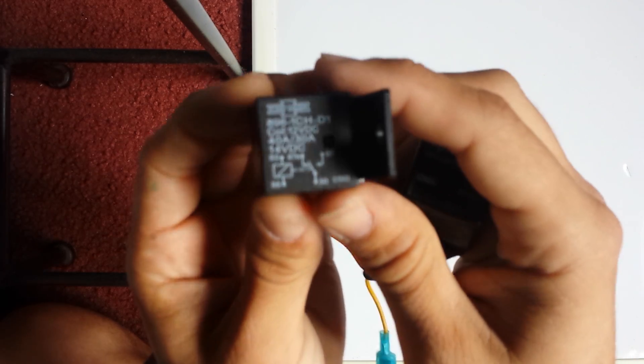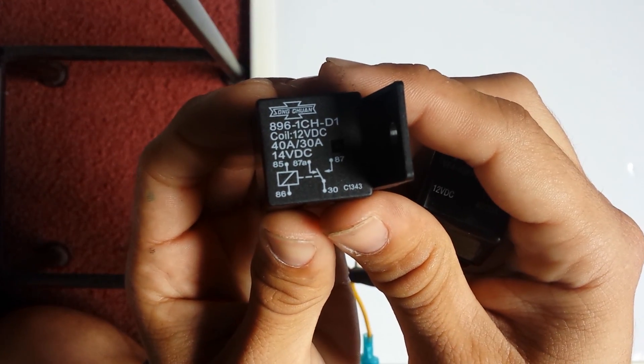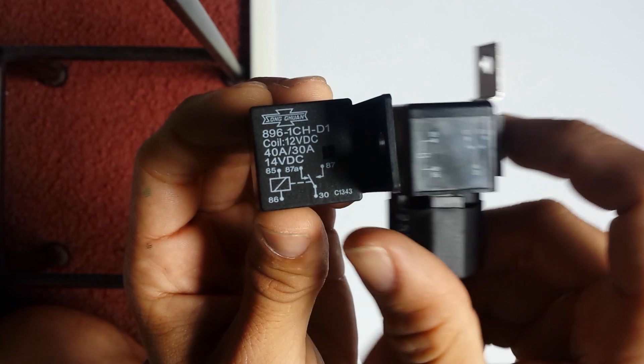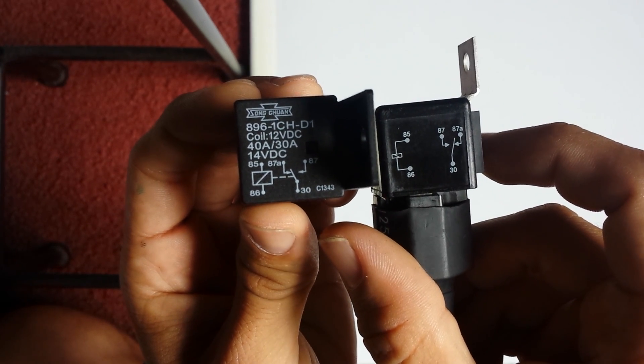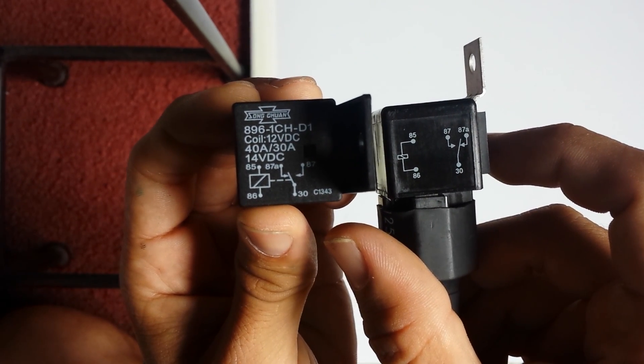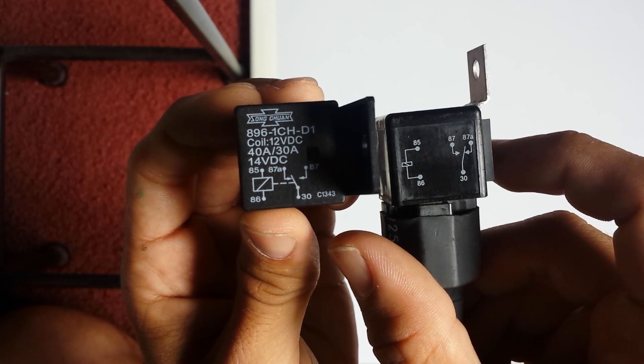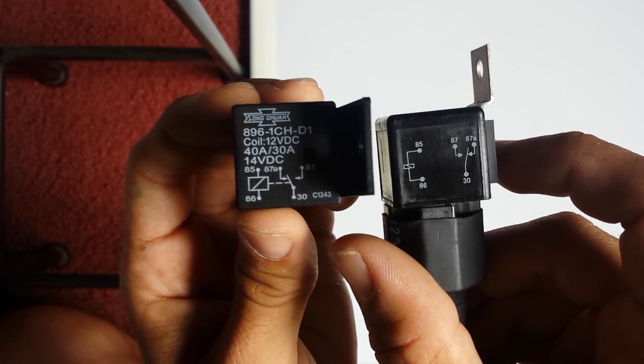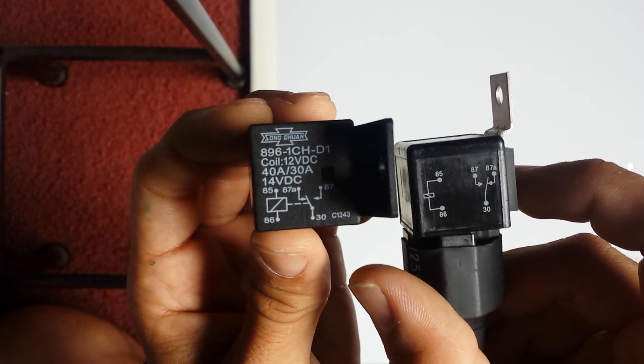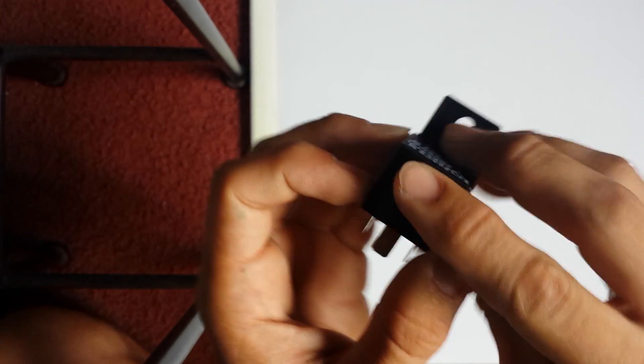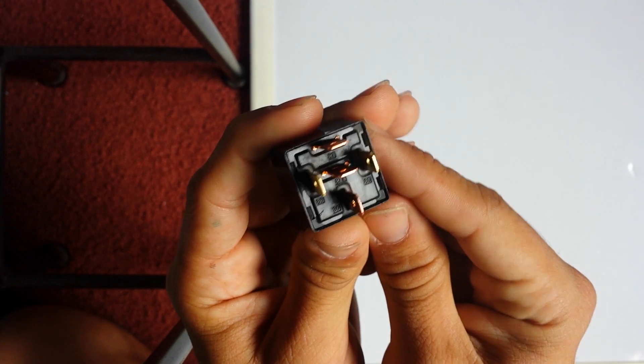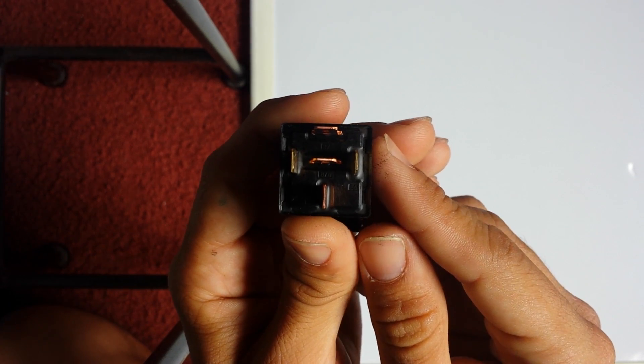So I got two relays here. They usually have a diagram on them—this one happens to be on top, this one on the side. It's just letting you know what the terminals are, what the role is, and what's going on with the relay internally.